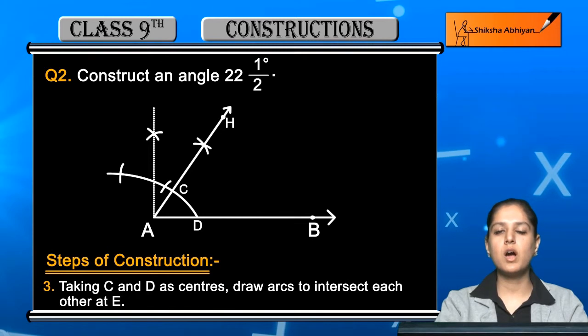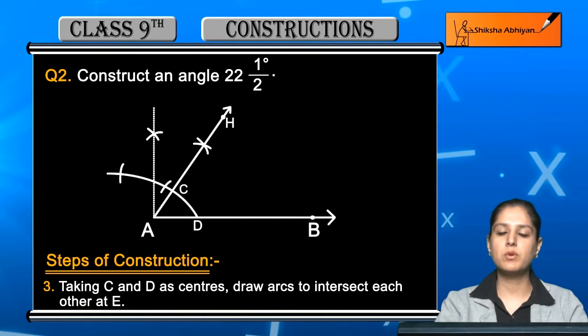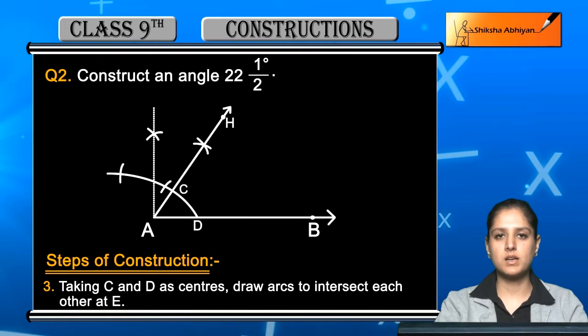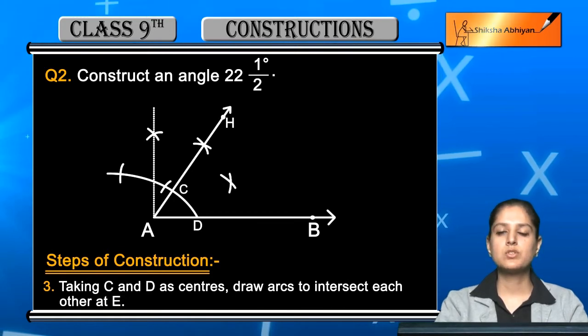Take a compass, open it from point C and draw an arc. Then keep the same radius from point D and draw another arc. Where these arcs intersect will be called point E.